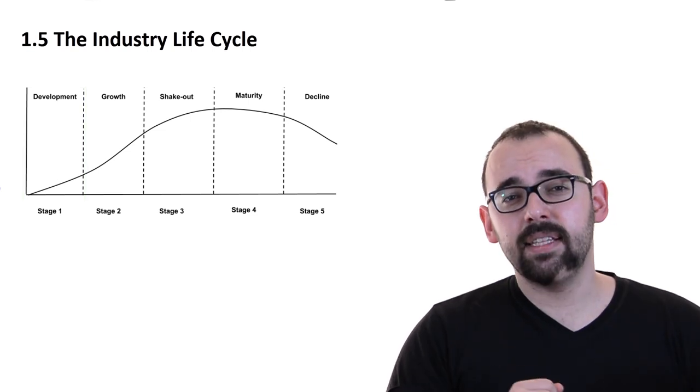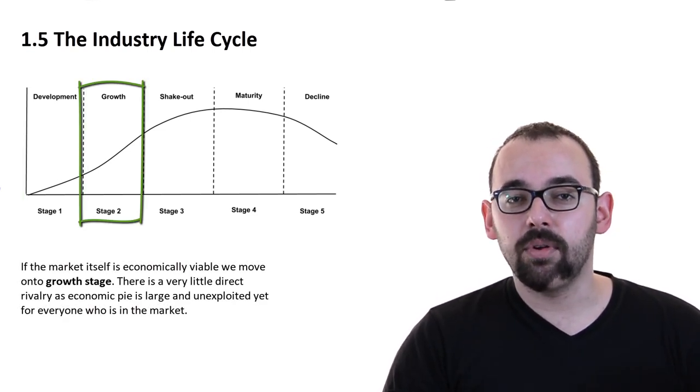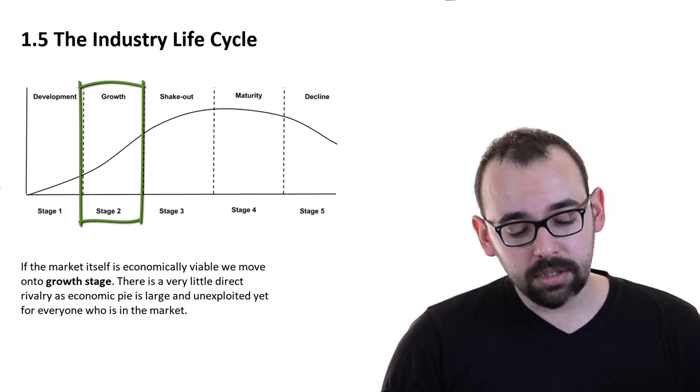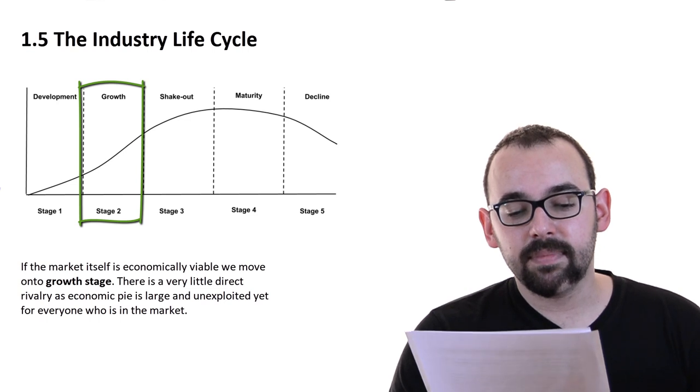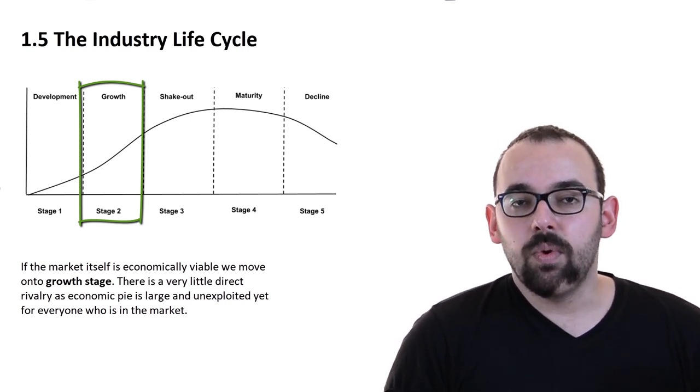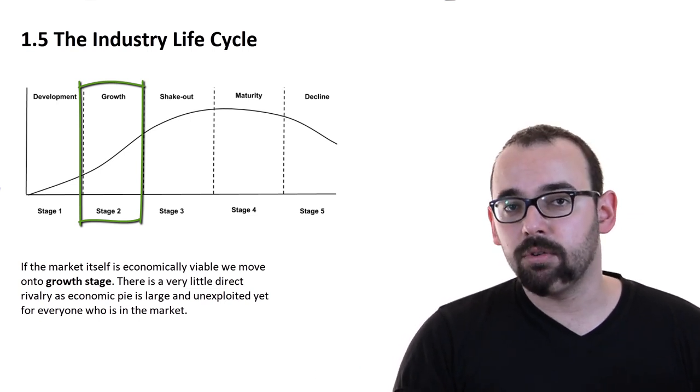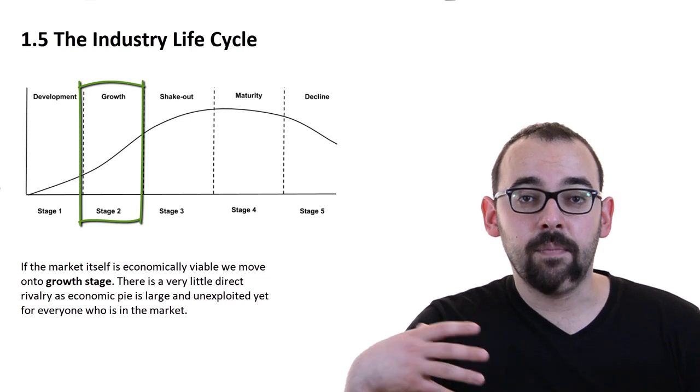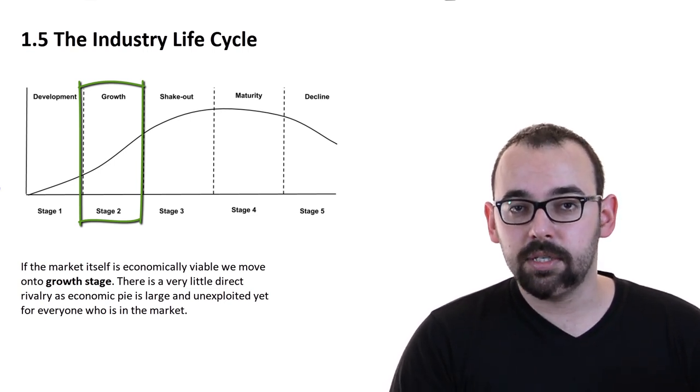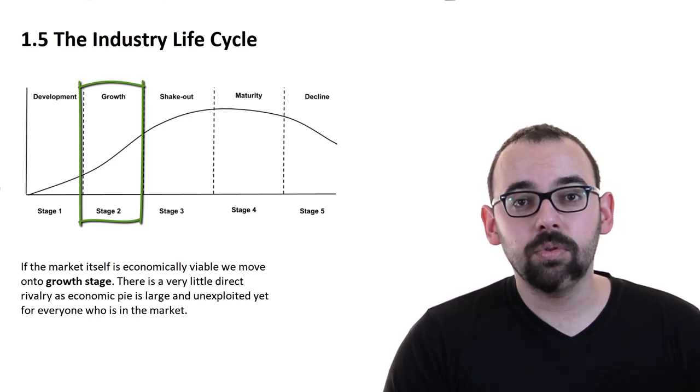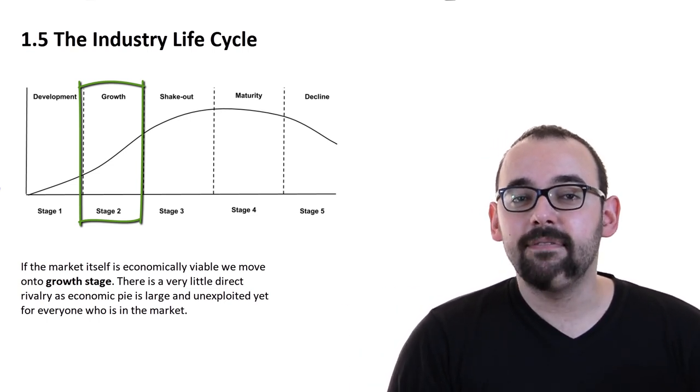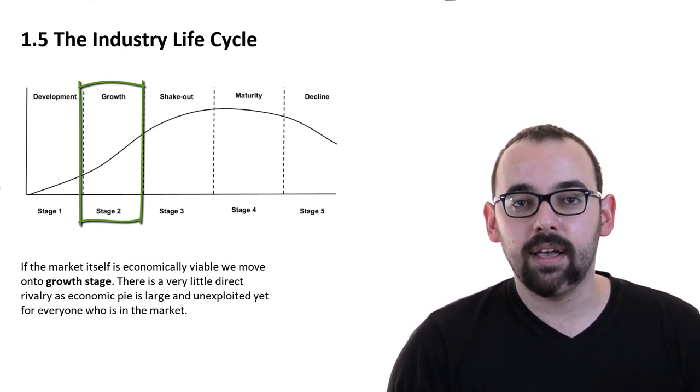That is the development stage. If the development stage is successful and some consumers start to realize that these personal computers might be a thing and there is going to be some purchase power for them, we move to the second stage, which is called the growth stage. There is a very little direct rivalry as economic pie is large and unexploited for everyone who is in the market. So what is happening? We see that the first few thousand people have purchased personal computers and now their friends and general people, general masses, are starting to adopt this idea as well and they are going to purchase it. So there is going to be so much purchase power that the companies that are in the market still do not have to compete with each other because of the huge purchase power. This is a very favorable situation. Markets are growing and inclining every day.